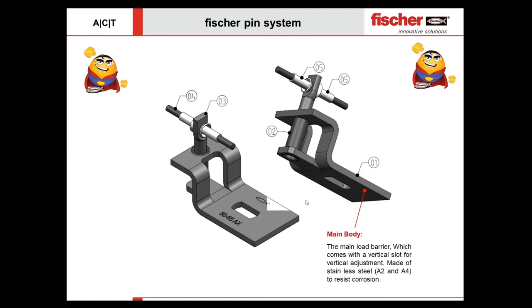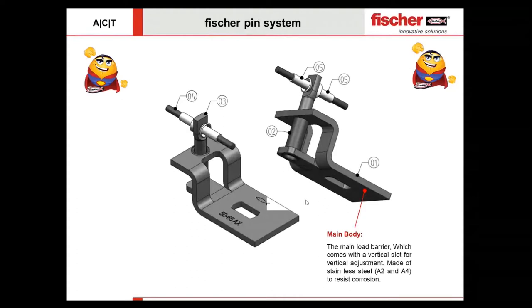When we speak about stone, we need vertical adjustment as well as front and back — lateral and longitudinal — position adjustment. The main body comes with a vertical slot, giving it the tendency to adjust the clamp up and down. This clamp generally comes in stainless steel, which is important since most facades are in external areas of the building where corrosion is a major concern, especially in our region which is completely across the coastal belt. It comes in both SS304 and SS316 materials.